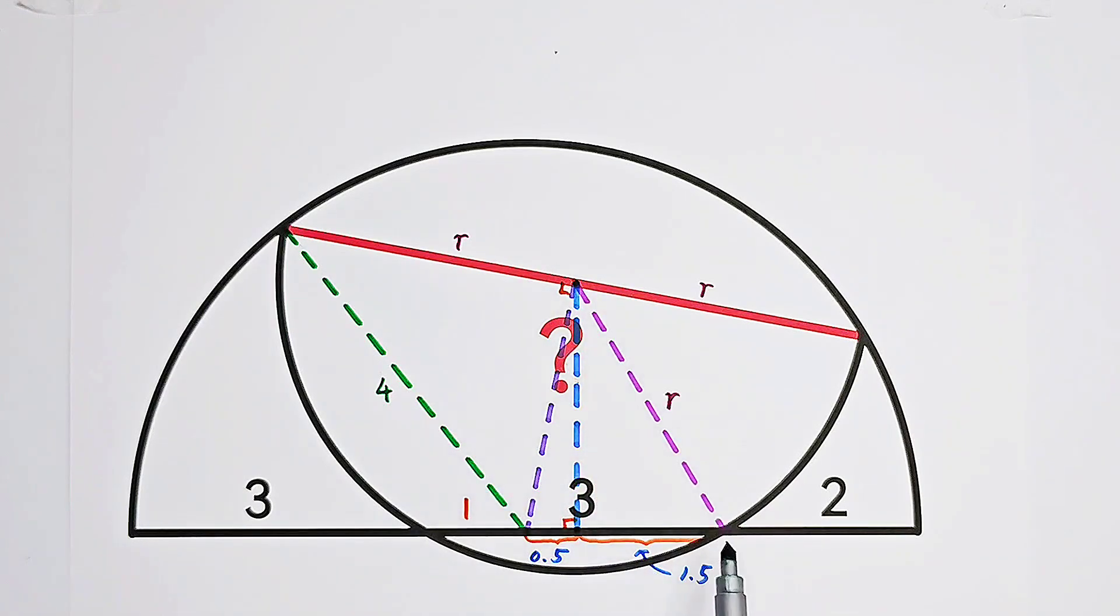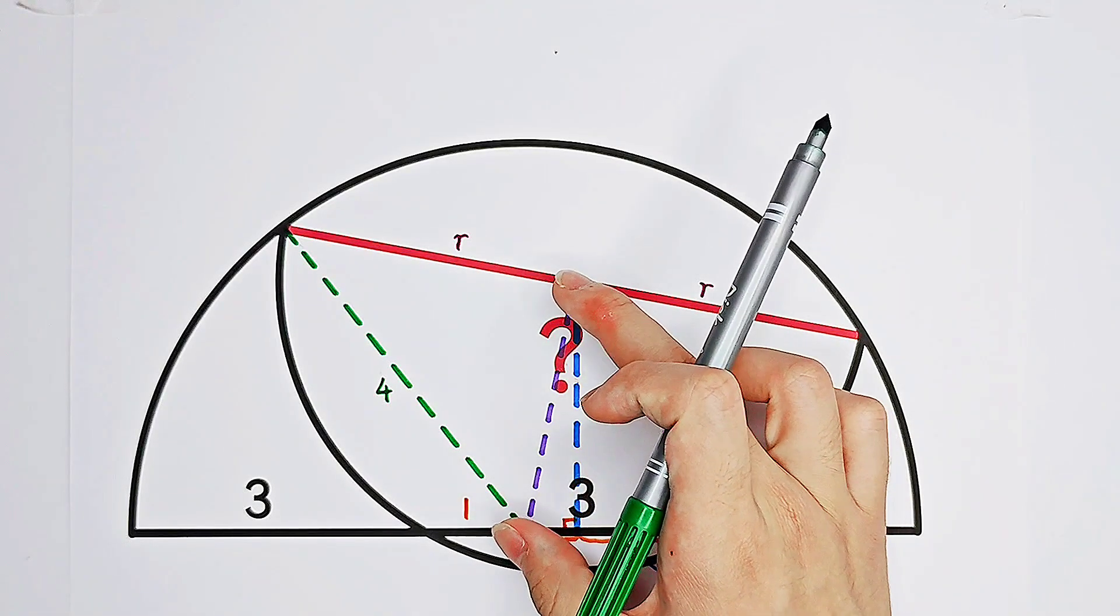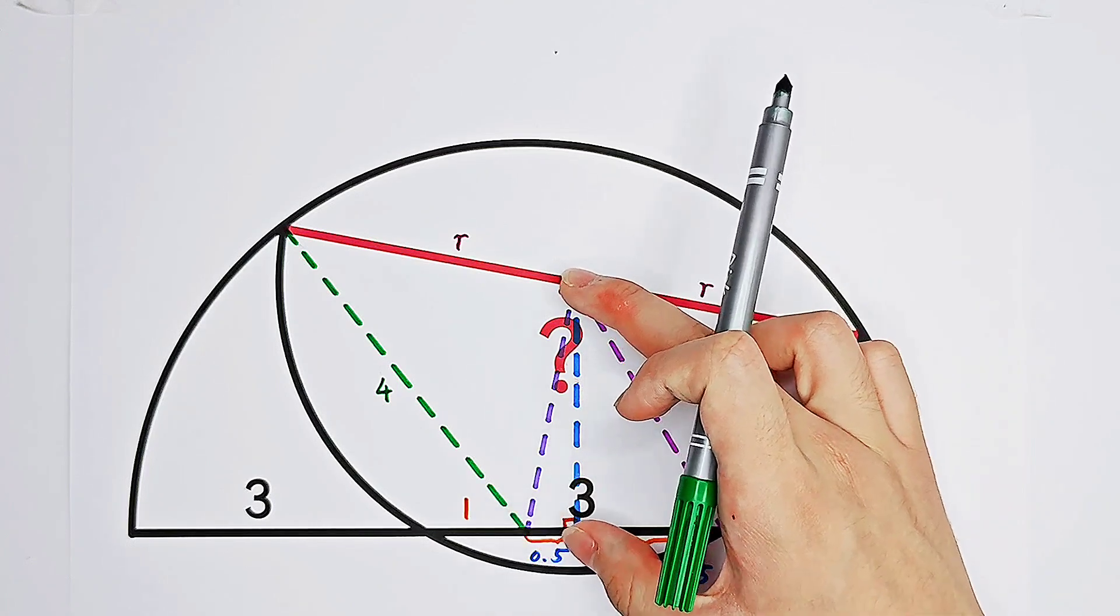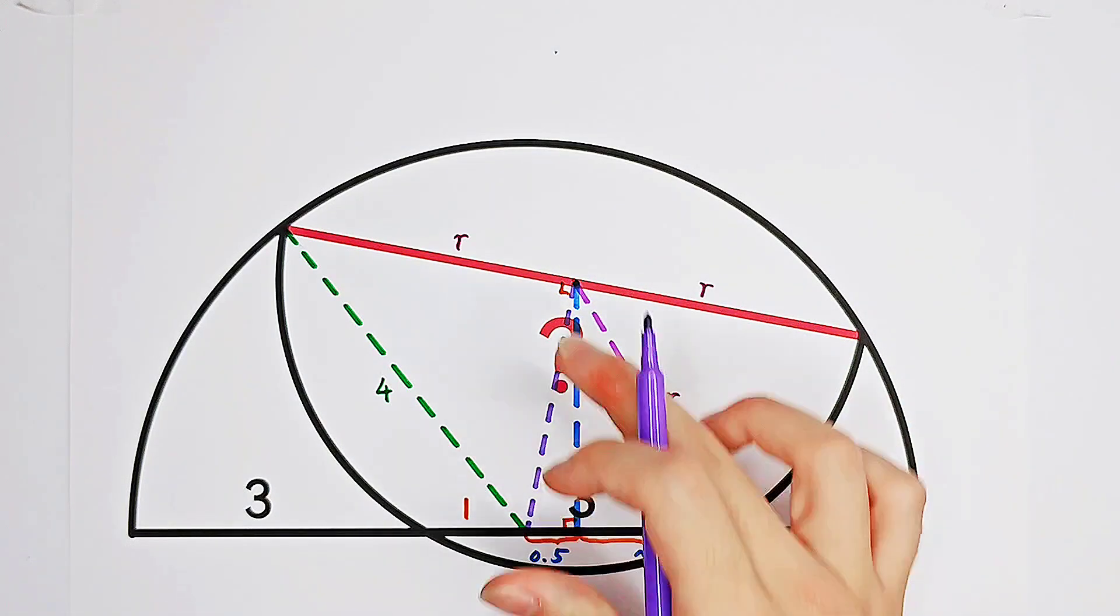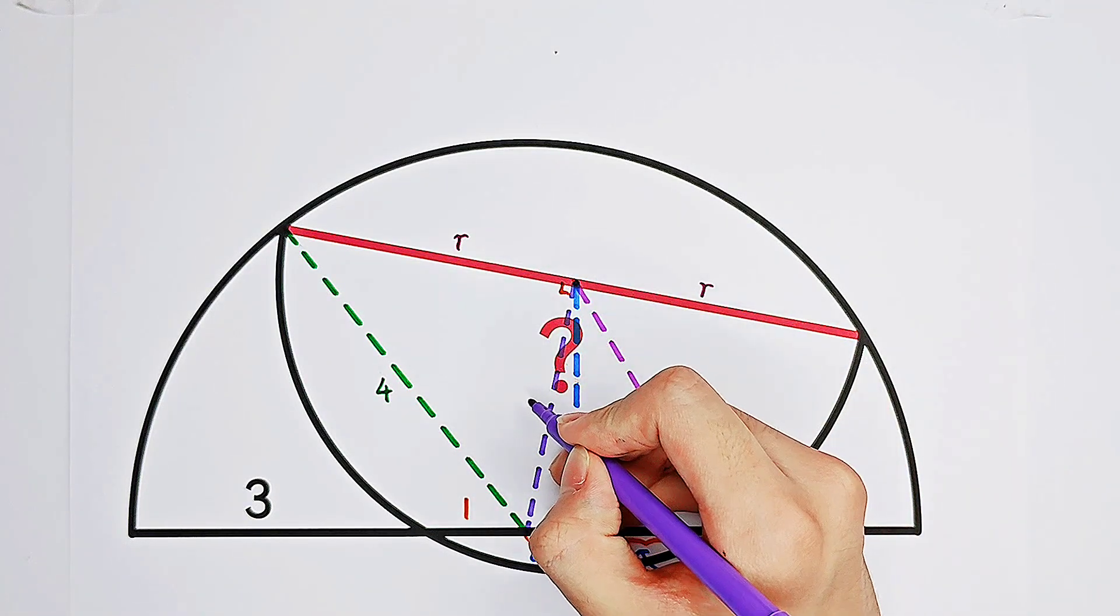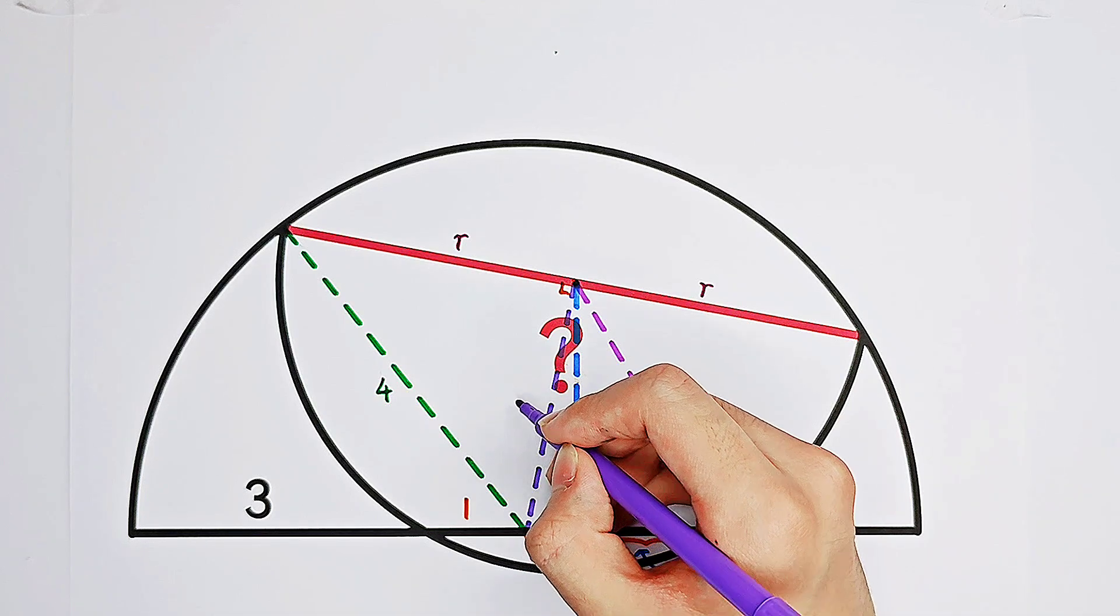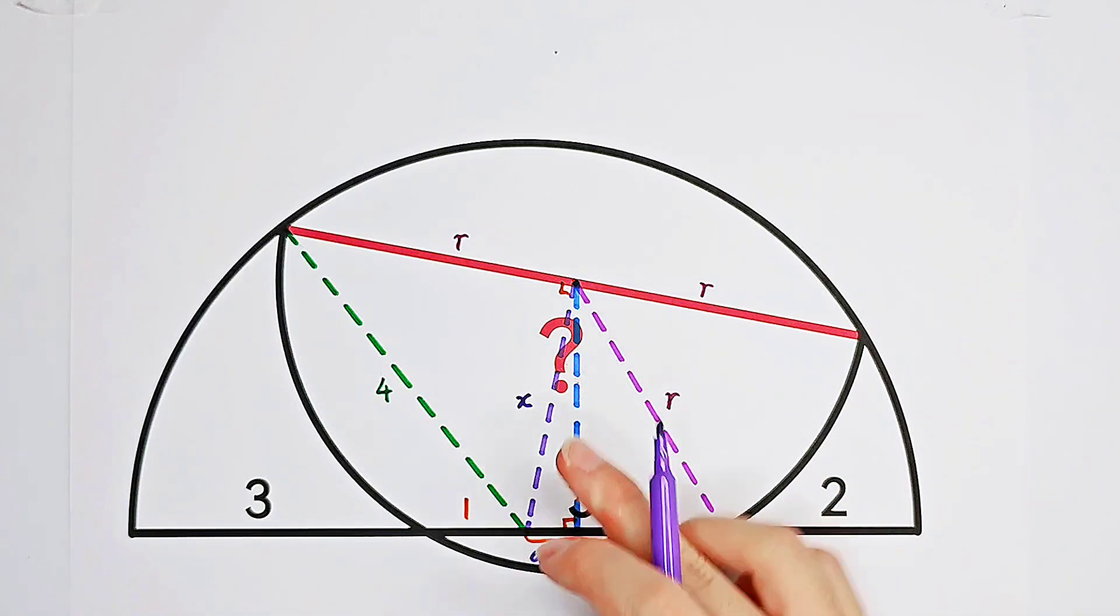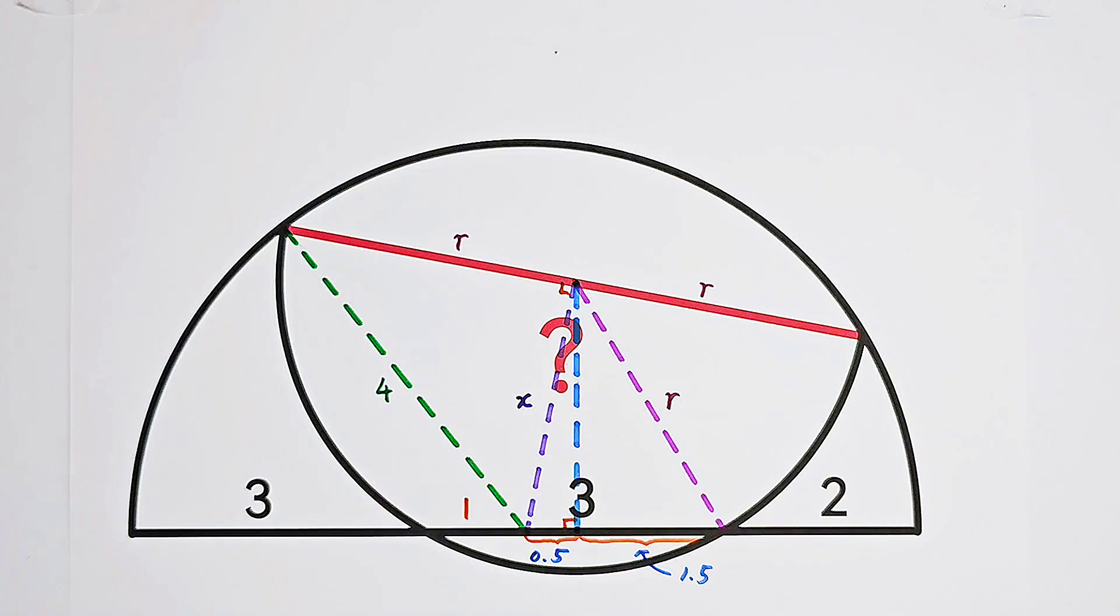And we're also allowed to have three unknowns. Of course, the radius of our small semicircle, R, is our unknown. And the other two are actually this purple one and this blue one. Suppose that the purple one measures X. And the blue one, I use H.